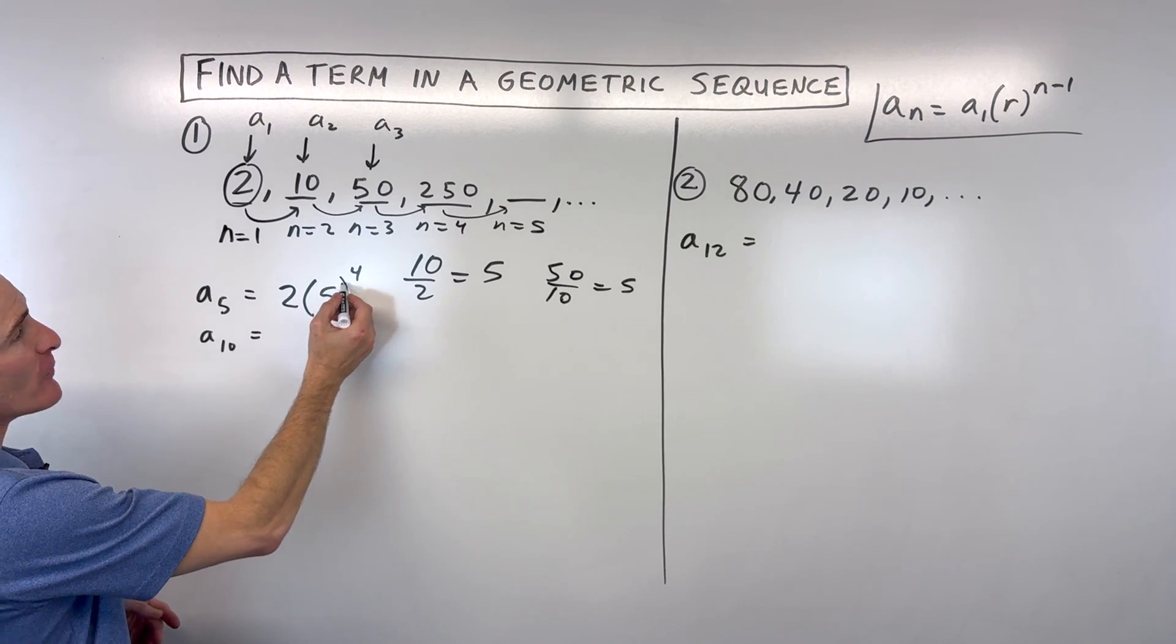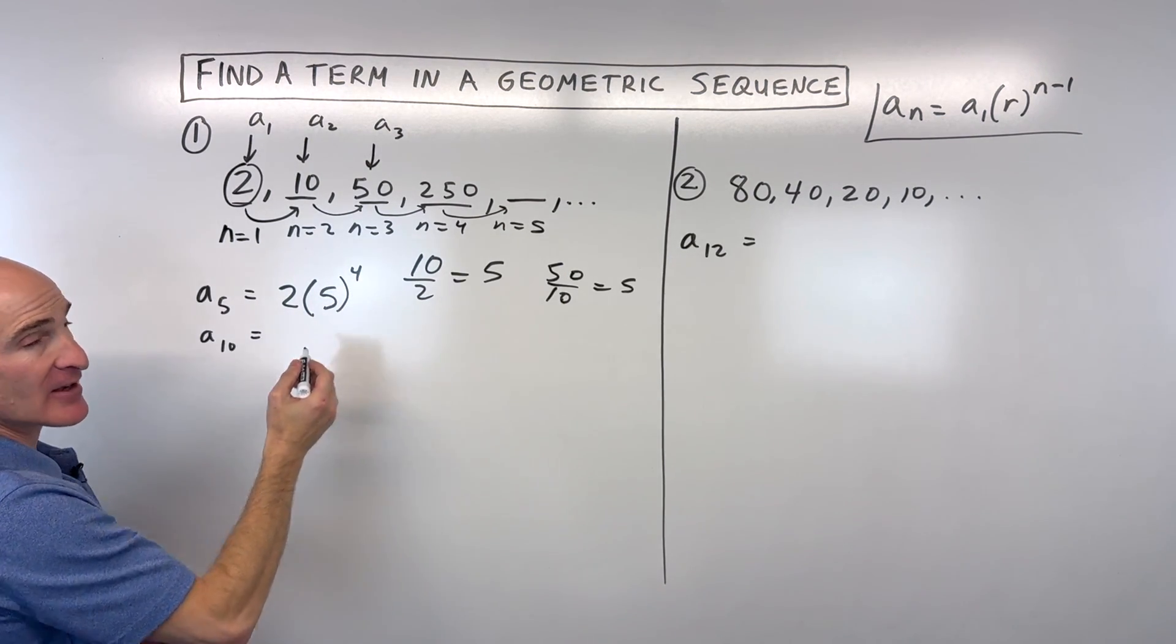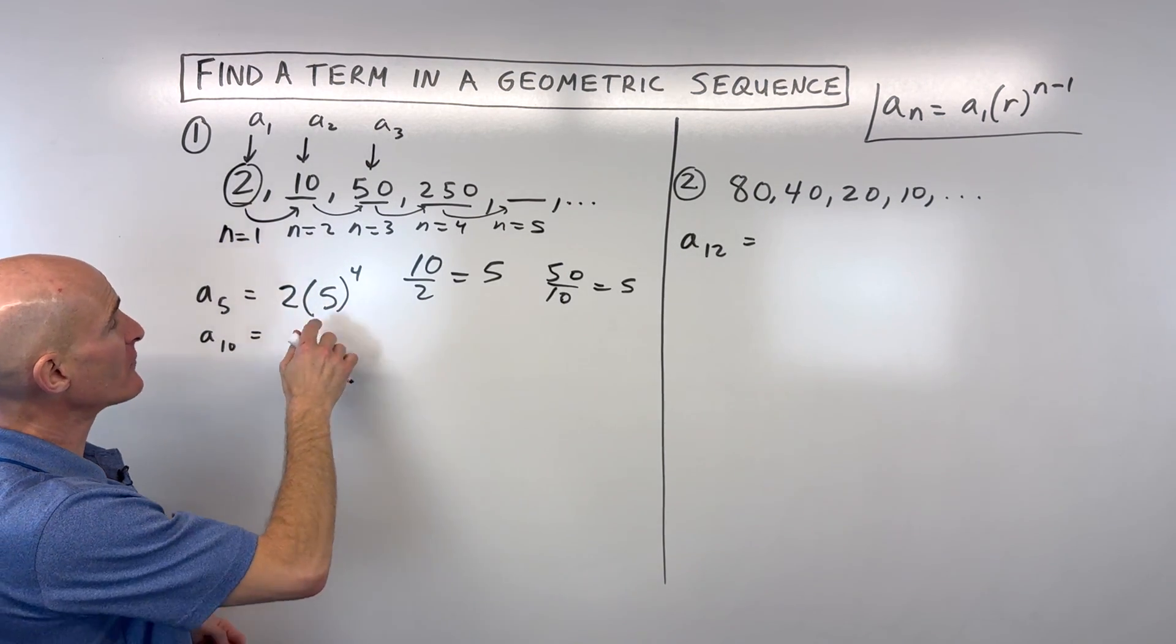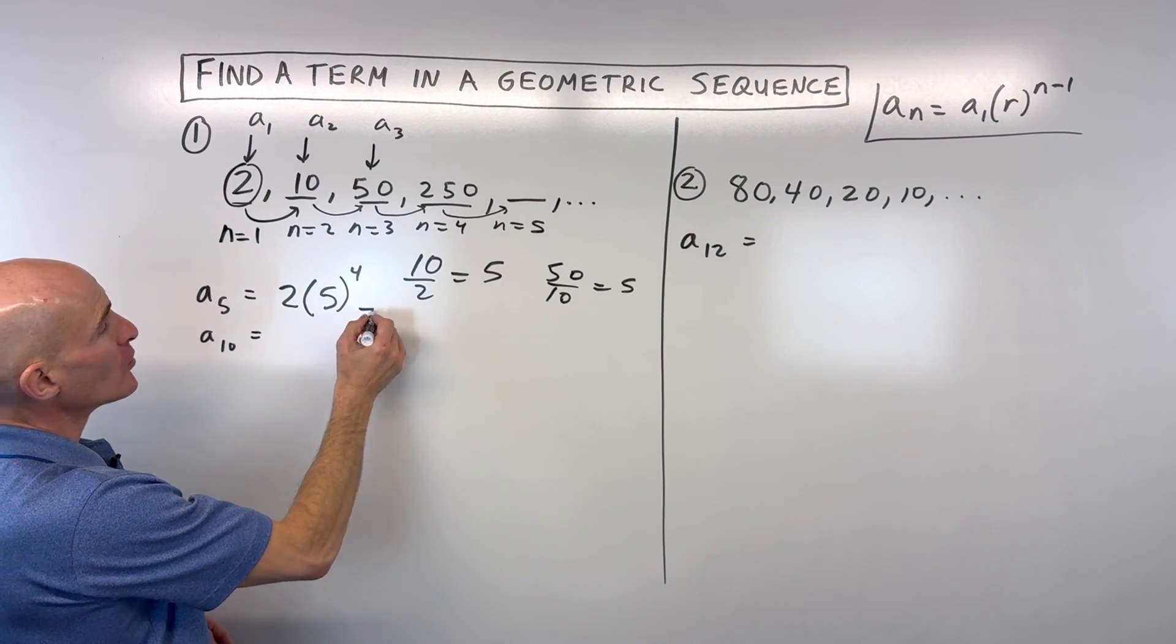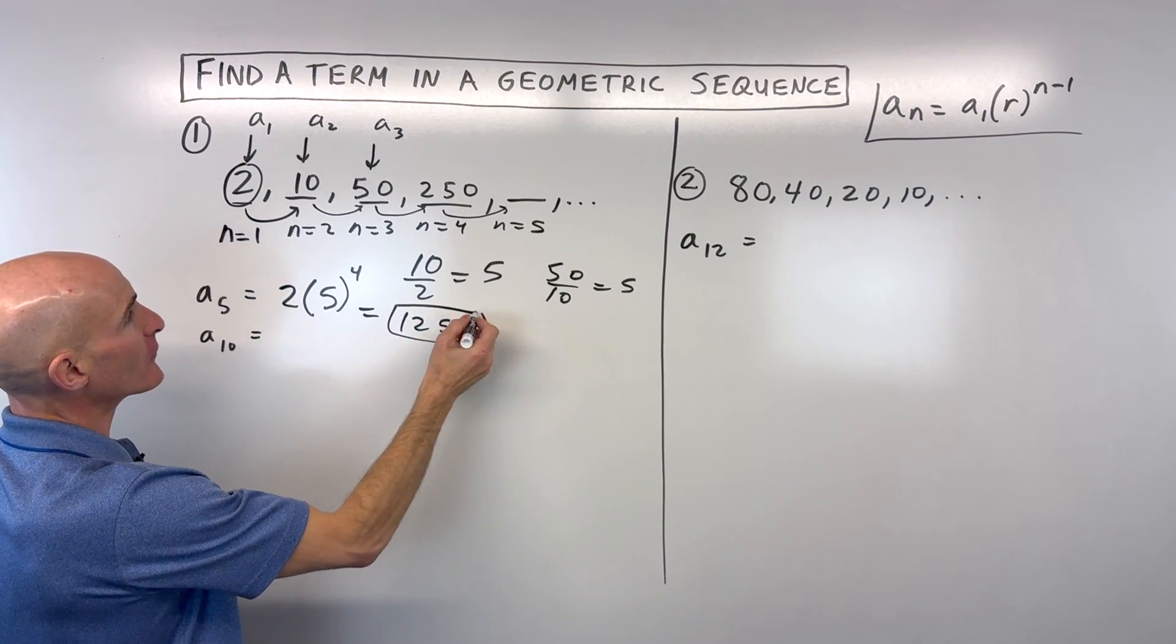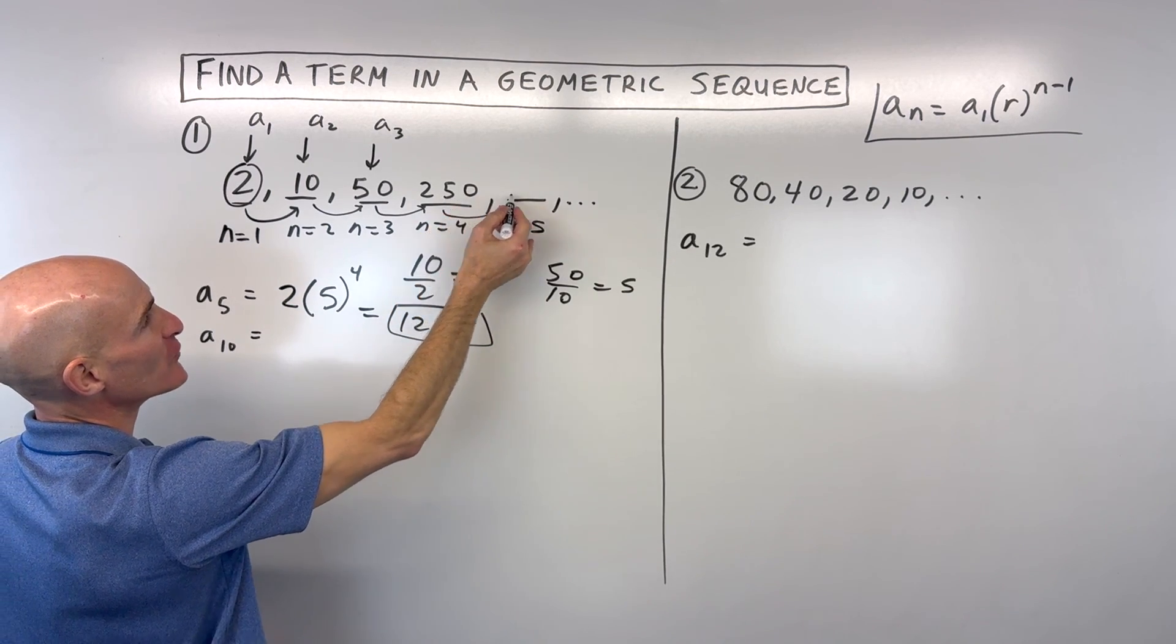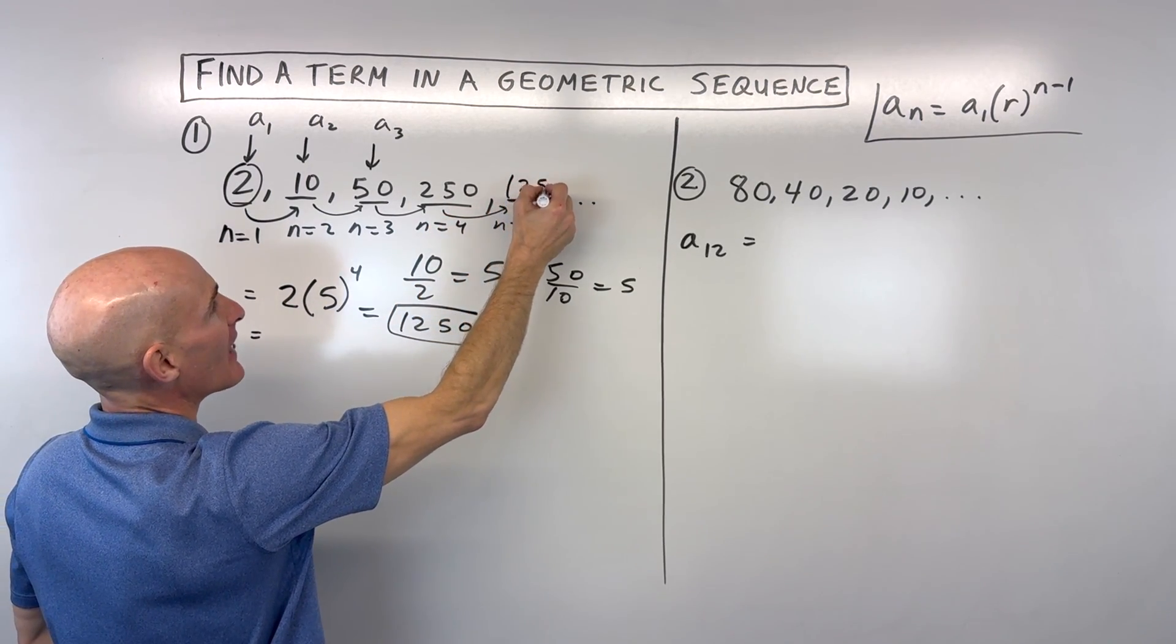So let's go ahead and simplify here. So 5 to the fourth is 5 times 5 times 5 times 5, 625 times 2, which gives us 1,250. Of course, you could say, Mario, I just have to multiply 250 by 5, and I can find it that way.